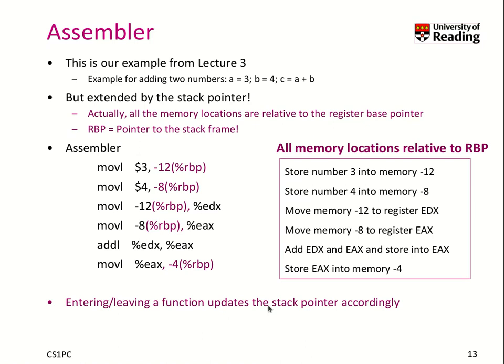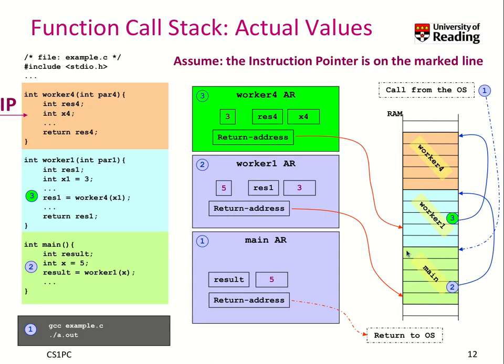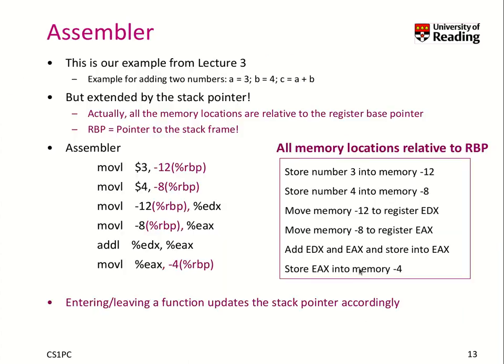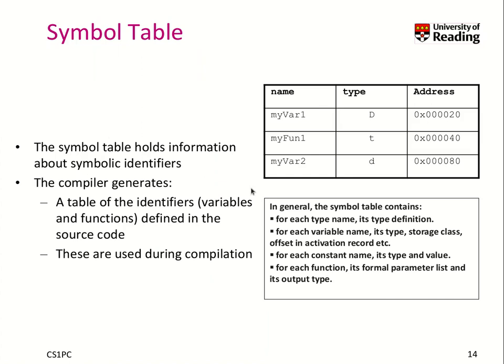And whenever you enter or leave a function, this stack pointer, also called the register base pointer, is basically updated accordingly. So when we run main, we can assume it is over here, the pointer. Then when you call worker 1, the pointer is here. Then you call worker 4, it's here. So that really allows you to write functions that can be executed anywhere on main memory, and that can also call each other.